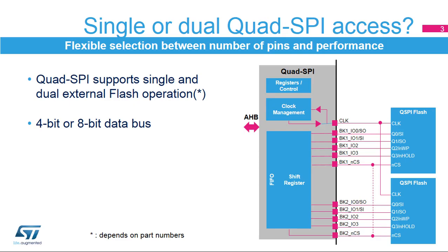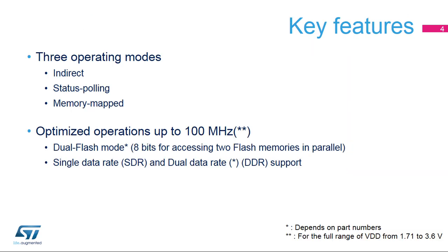The Quad SPI Memory Interface, integrated inside STM32F7 microcontrollers, provides a communication interface allowing the microcontroller to communicate with external SPI and Quad SPI memories. It supports the connection of one or two external memories, meaning data can be transferred over a 4- or 8-bit data bus. It gives the user flexibility to choose between 6 pins for a single and 10 pins for a double connection, and the performance of the data transfer: 4-bits for a single or 8-bits for a double connection.